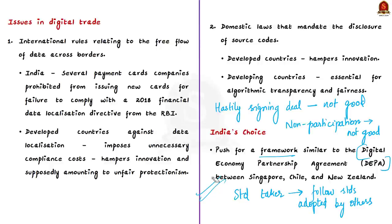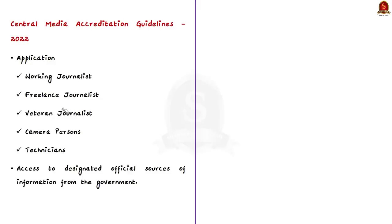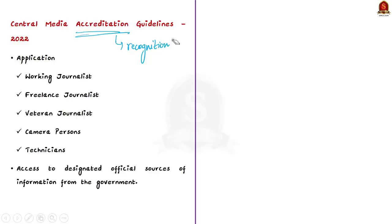The next article covers the Central Media Accreditation Guidelines 2022, released by the Union government. Its significance is that for the first time, journalists working for digital news publishers will be recognized. Accreditation means recognition of working journalists and other persons — freelance journalists, veteran journalists, camera persons, and technicians — for the purpose of access to designated official sources of information from the government.